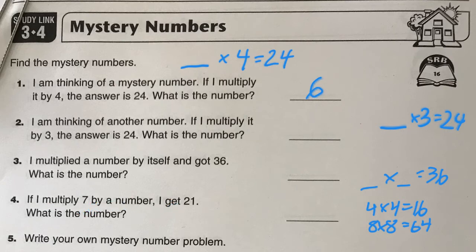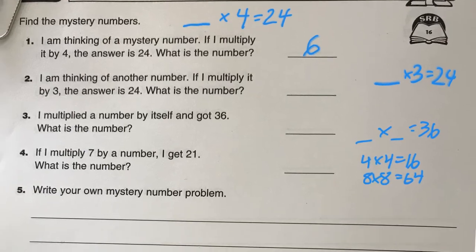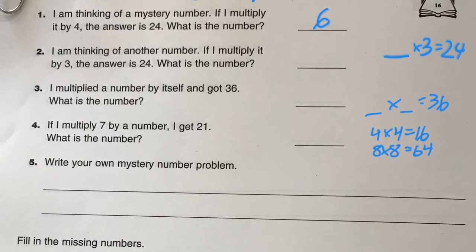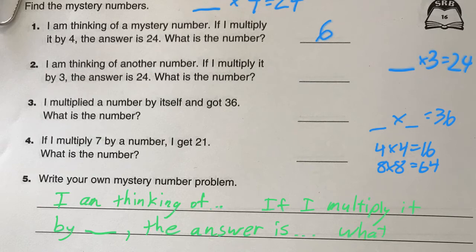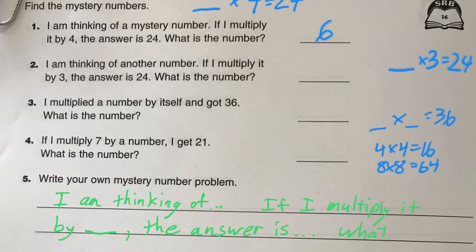You should be able to do the rest of those on your own. And then you're going to write your own. You could just kind of copy their style — just like they did: I'm thinking of a mystery number, if I multiply it by whatever, the answer is whatever, what is the number? Just put your own numbers in. It should be pretty easy to do that one on your own. Or you could do a couple if you want.